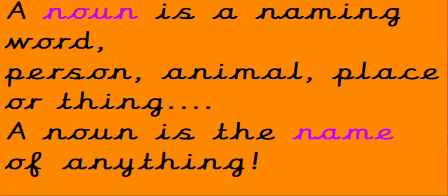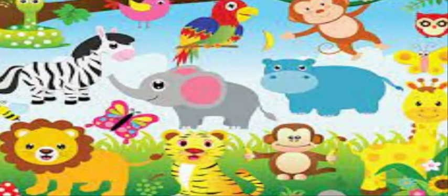A noun is a naming word — person, animal, place or thing. A noun is the name of anything. I'm going to look at animal names now. Any animal name that you can think of is a noun — any animal, not just the animals on my board.